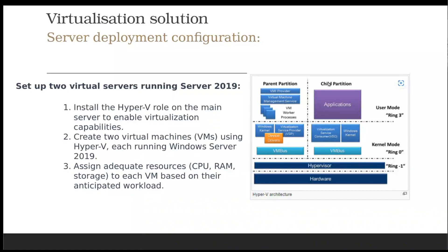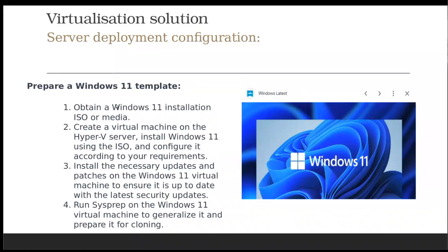This is just a presentation of how some things could look like. The main thing about virtual disk is the Windows you are using should be the latest and updated. You need to create a template: create a virtual machine on the Hyper-V server, install Windows 11 using ISO, configure it according to your requirements, and install the necessary update patches to ensure it's up to date with the latest security updates. Then you have to sysprep it to generalize it — because that template will be used to create as many virtual disks as you need for your staff and remote users.